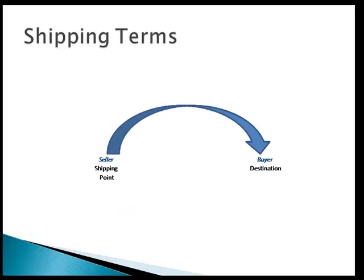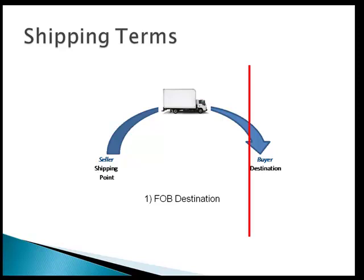The opposite is FOB destination. Same diagram, just change the terms. Draw the line at the destination. Here, the seller owns the inventory and pays shipping costs and is responsible for it while it's in transit. It stays on the seller's balance sheet until it reaches the destination — that's when the inventory trades hands.